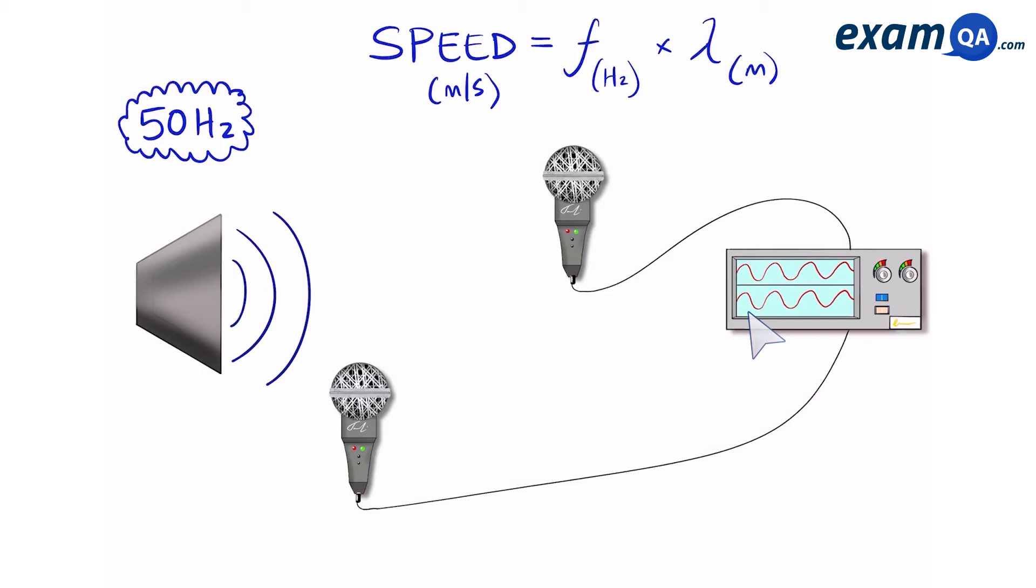Now get your measuring tape and measure the distance between the two microphones. Let's suppose that this distance was 3 meters. That means the wavelength of sound in this particular example was 3 meters.